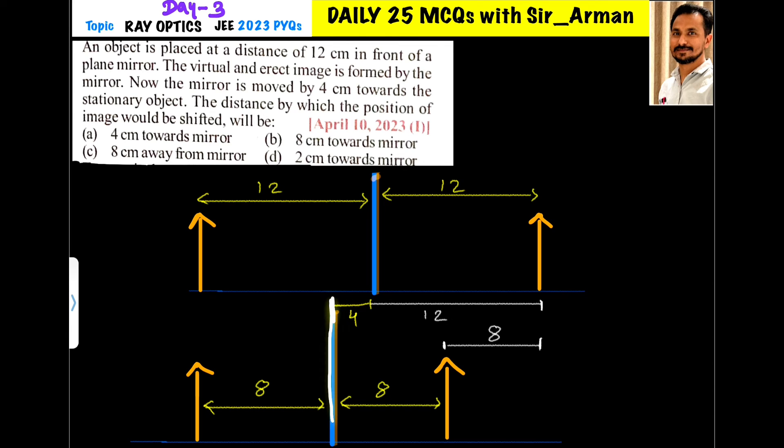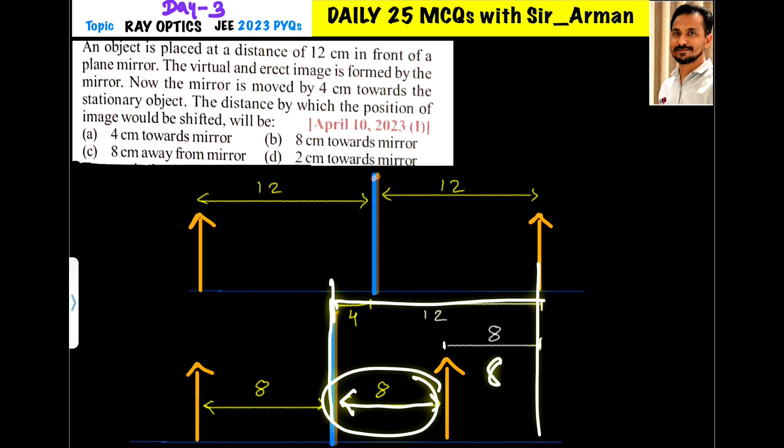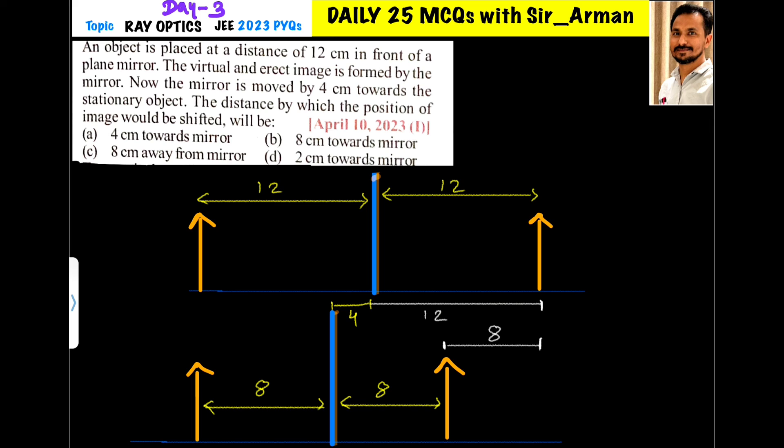And from this mirror, the new position of the image is 8 cm. The total distance between the old and new image is 16 minus 8, which equals 8. This means the image is shifted by 8 cm.